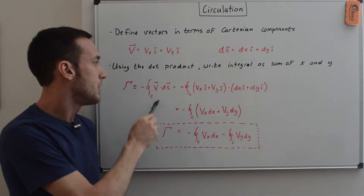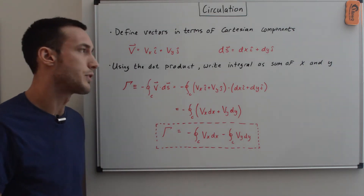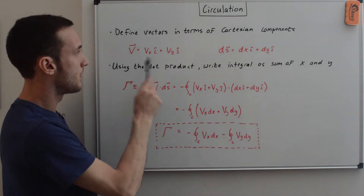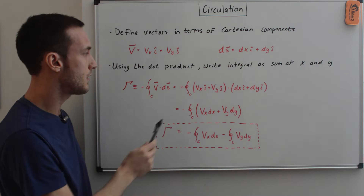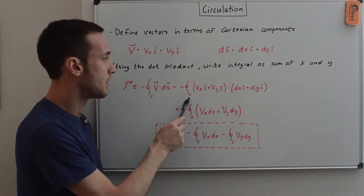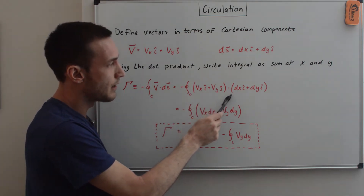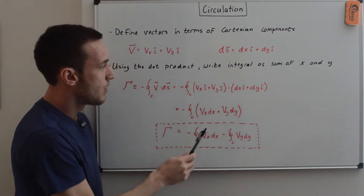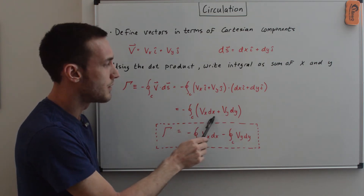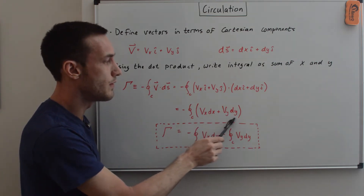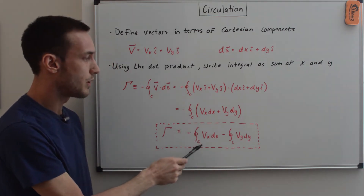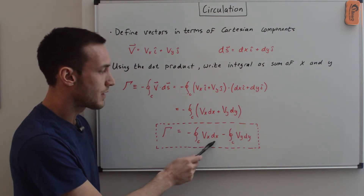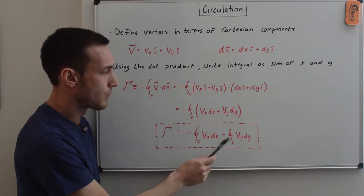Using the dot product in the circulation equation, we substitute V and DS and get: the negative of the line integral of (Vx i-hat + Vy j-hat) dotted with (dx i-hat + dy j-hat). Performing the dot product gives Vx·dx plus Vy·dy. Splitting into two separate integrals, the circulation equals the negative of the integral of Vx dx minus the integral of Vy dy.